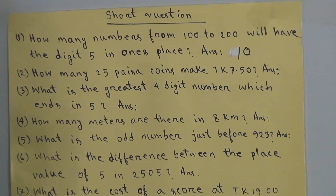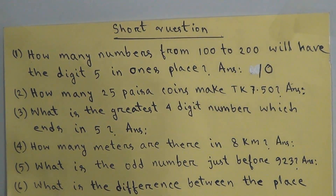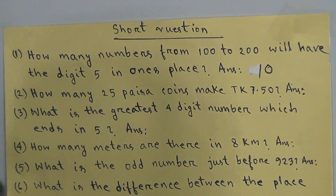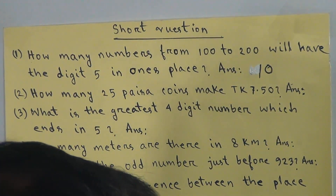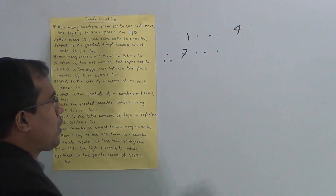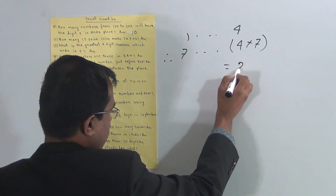Question 2: how many 25 poysa coins make Tk 7.50? We know that 4 coins of 25 poysa make one taka, because 25 + 25 + 25 + 25 = 100. So in 7 taka, the total number of 25 poysa coins is 4 × 7 = 28.